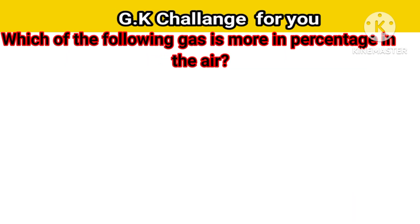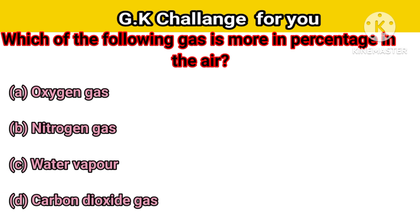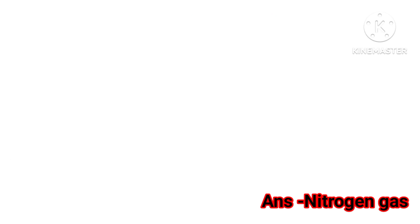Now, which of the following gases is present in the highest percentage in the air? Option A: Oxygen gas, B: Nitrogen gas, C: Water vapor, D: Carbon Dioxide. Your right answer is nitrogen gas.